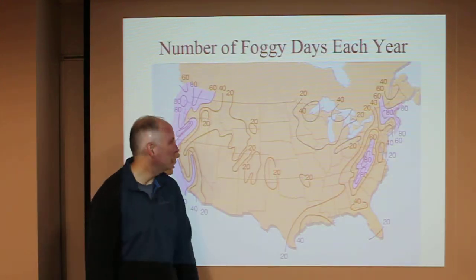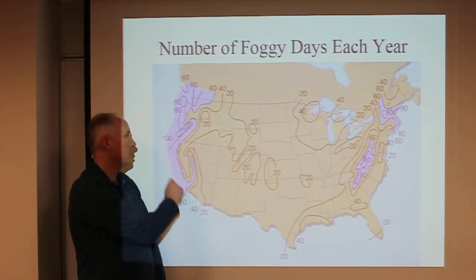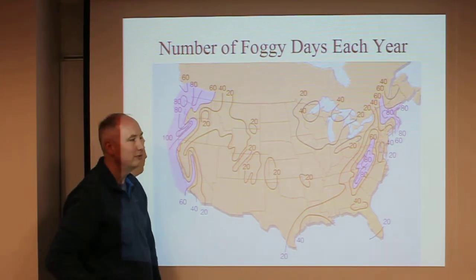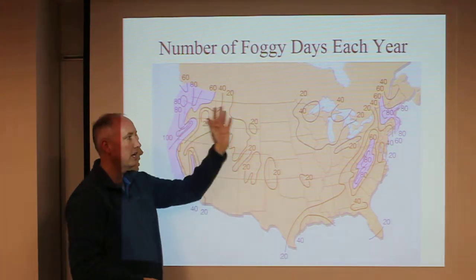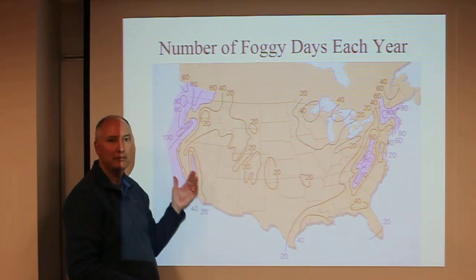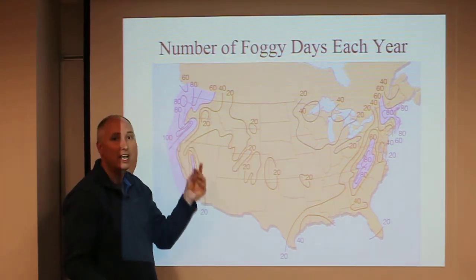Number of foggy days each year. Look at all these foggy days along the coast—100 foggy days in Northern California. Is that a weather event or is that climate? We looked at long-term data to figure out the average number of foggy days. That's climate.